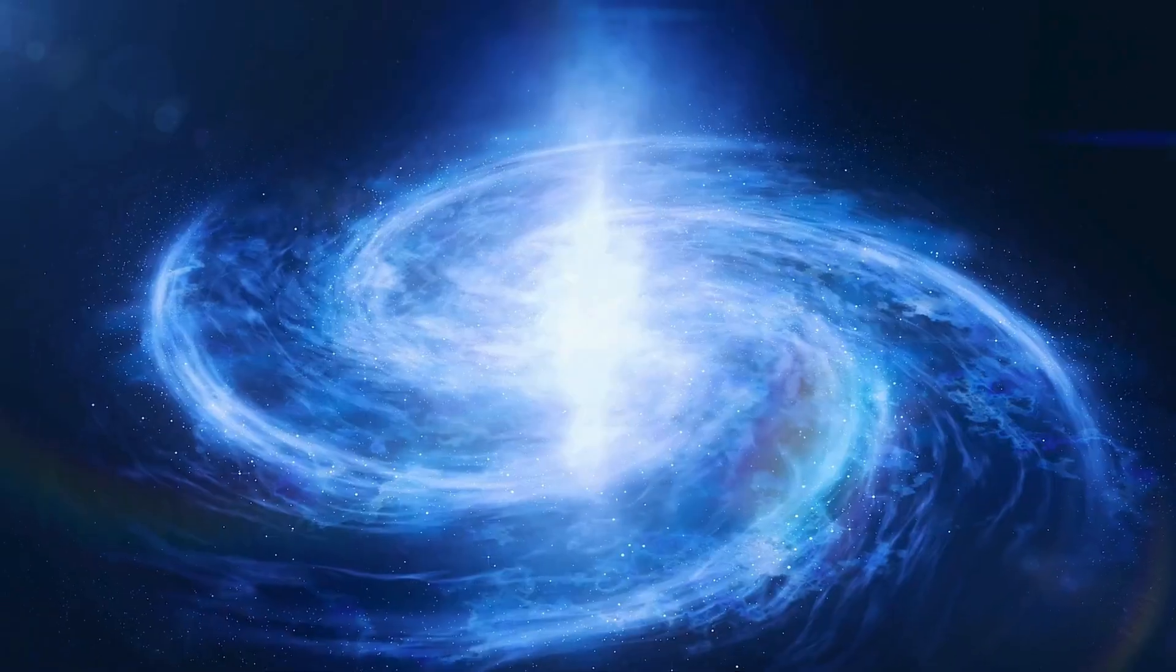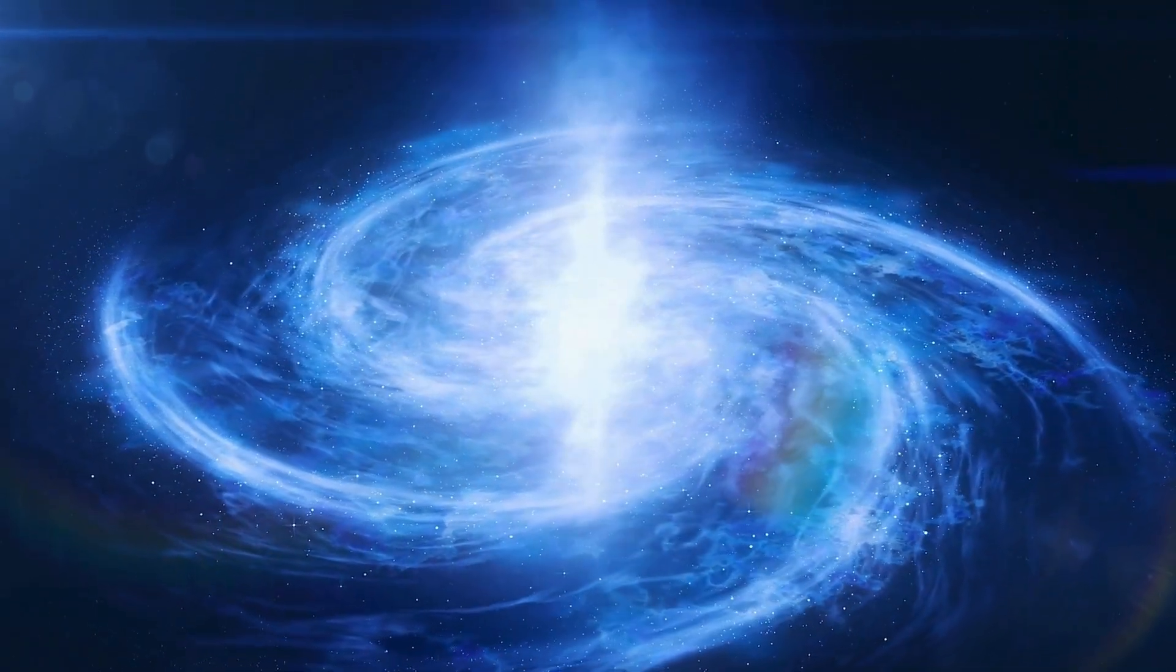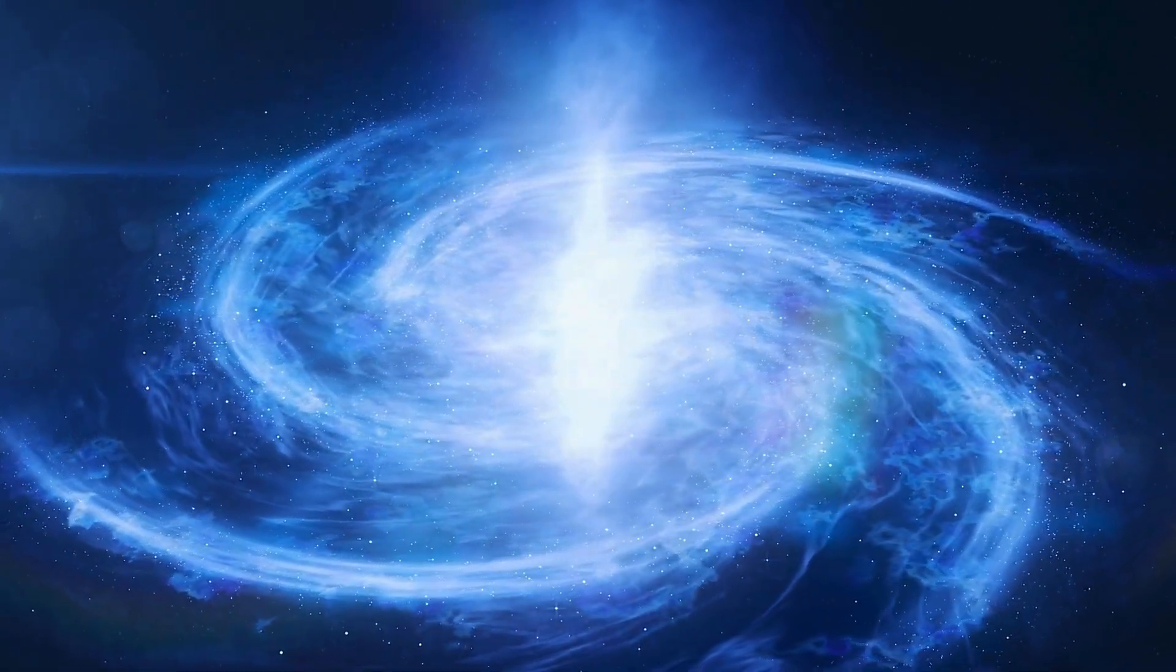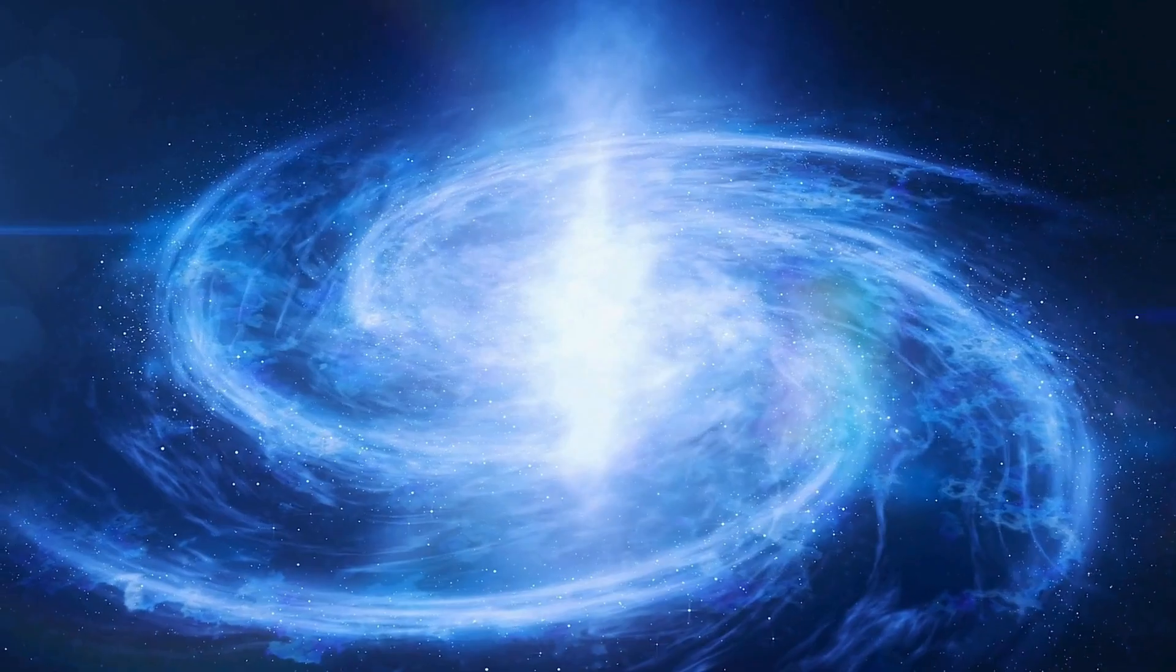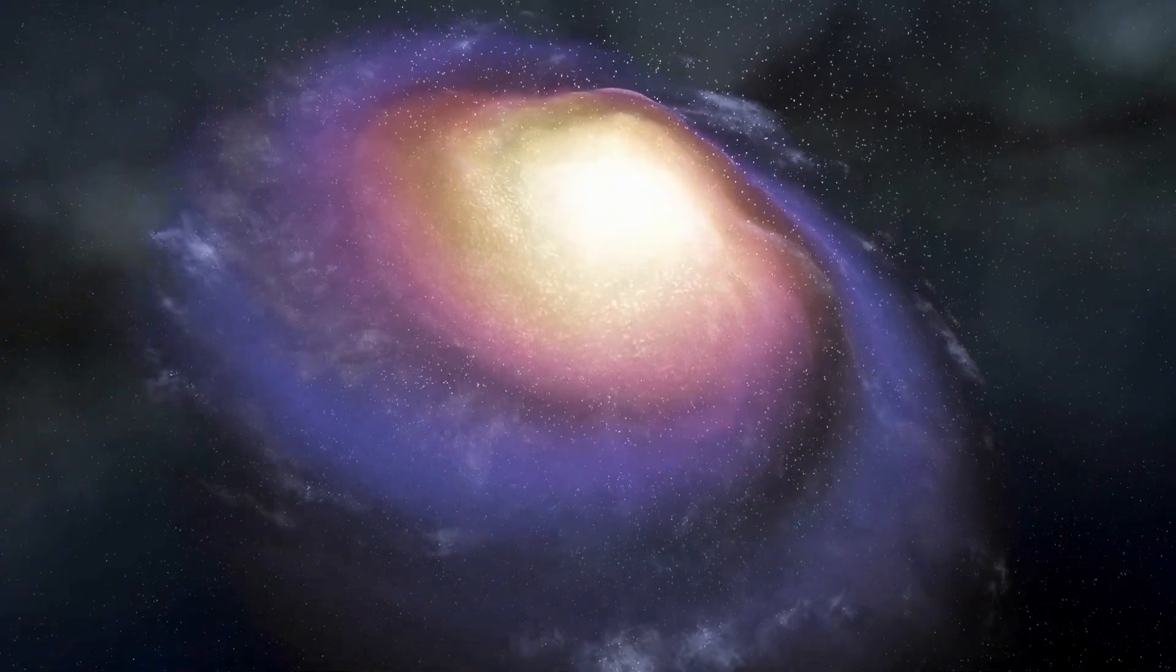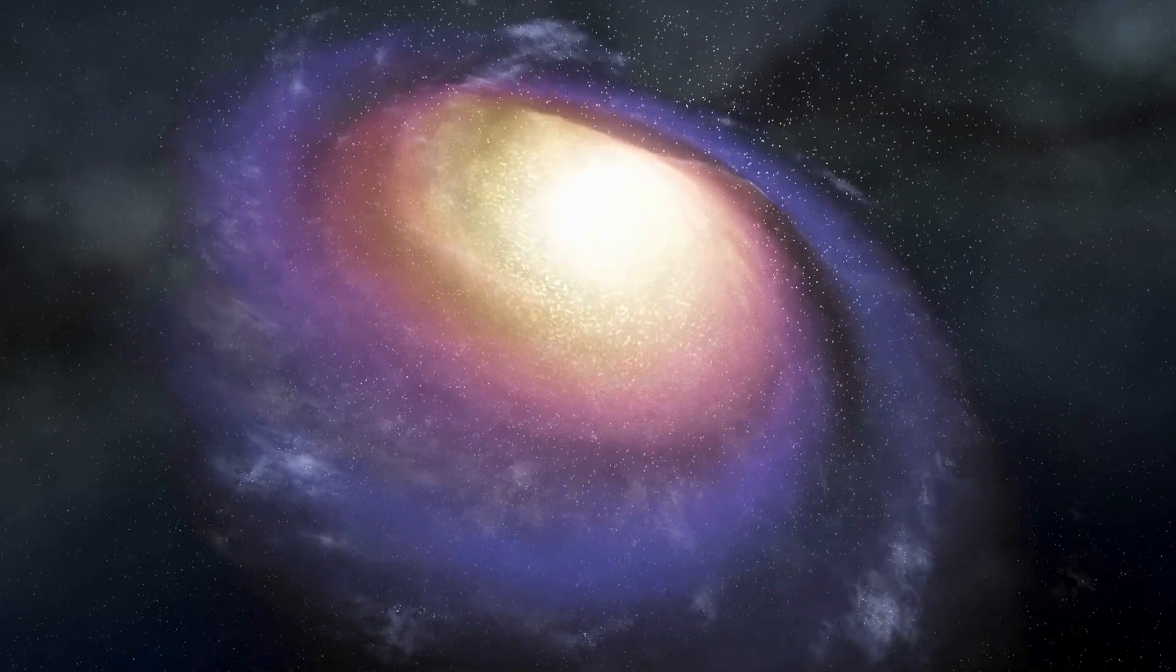Betelgeuse is a red star, but it wasn't always red. It was yellowish about 2 million years ago, just like our sun. Over the years, the color started changing to orange-red, and then about 2,000 years ago, it slowly started becoming the red star we know today. This fact has made scientists believe that the star is aging.